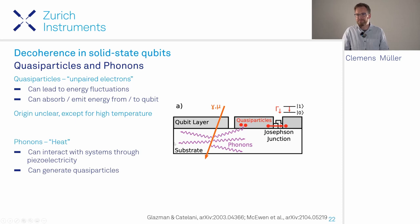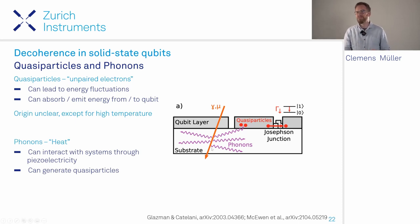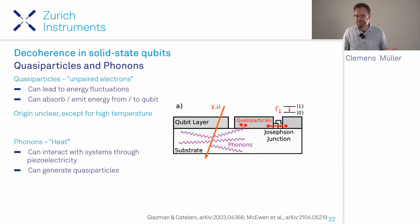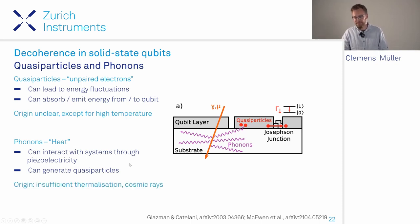Phonons—essentially heat and temperature of the system—can directly interact with qubits. In piezoelectric materials, phonons manifest as fluctuations in electric fields. Phonons can also generate quasiparticles in superconducting systems. Their origin is essentially temperature and events like cosmic ray impacts.